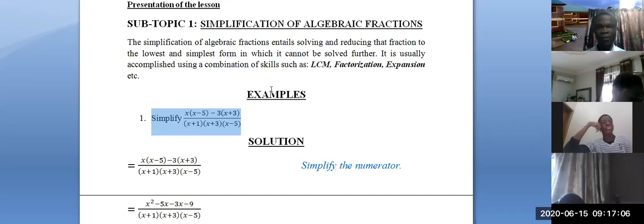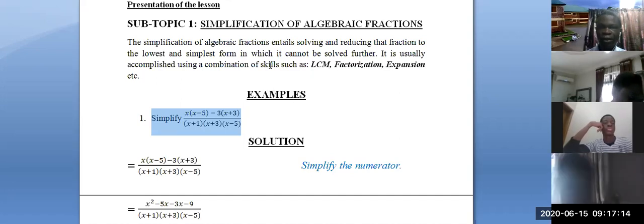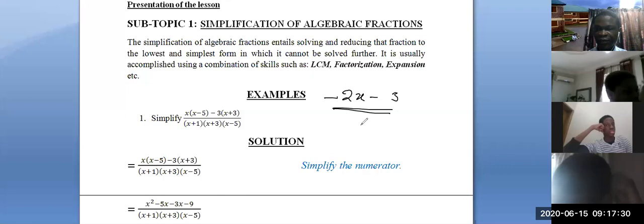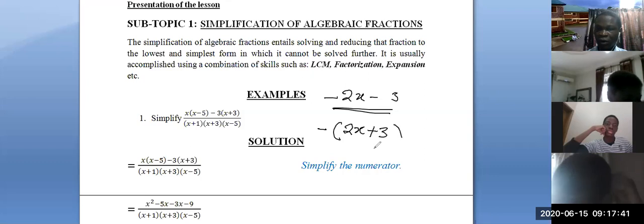Simplification of algebraic fractions entails reducing that fraction to the lowest and simplest form in which it cannot be simplified further. There is a difference between something not being simplified further and something put in another form. For instance, minus 2x minus 3 — you can factorize this as minus(2x plus 3). They are the same thing; you are not solving it, only putting it in another form.